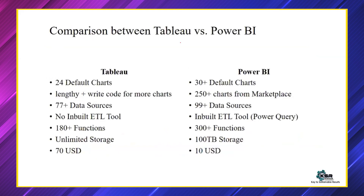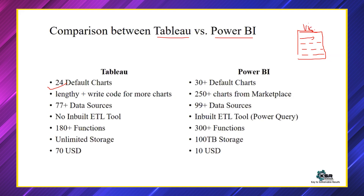Now let's see the basic comparison between Tableau and Power BI. Tableau has around 24 default charts in its visualization pane, whereas Power BI has 30 plus default charts — now around 33, with the latest addition being the multi-level KPI card. The count of default visuals in Power BI keeps increasing every six months, while Tableau has had only 24 visuals since 2017-18.